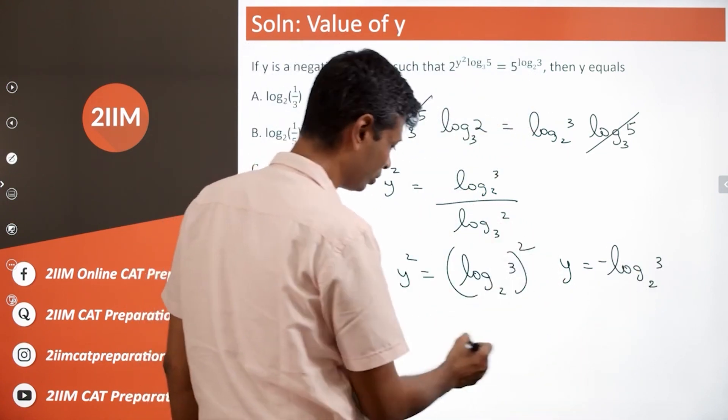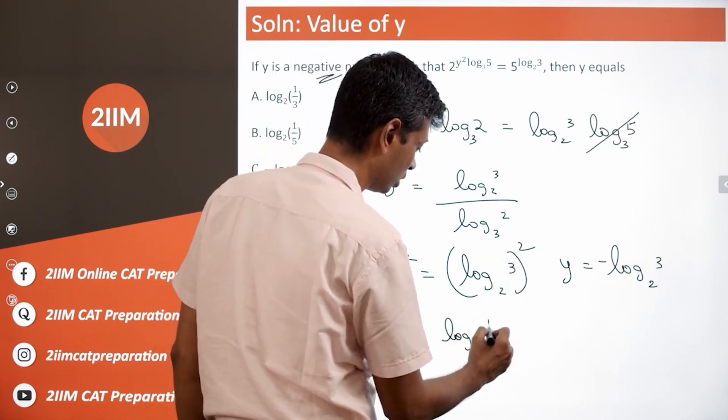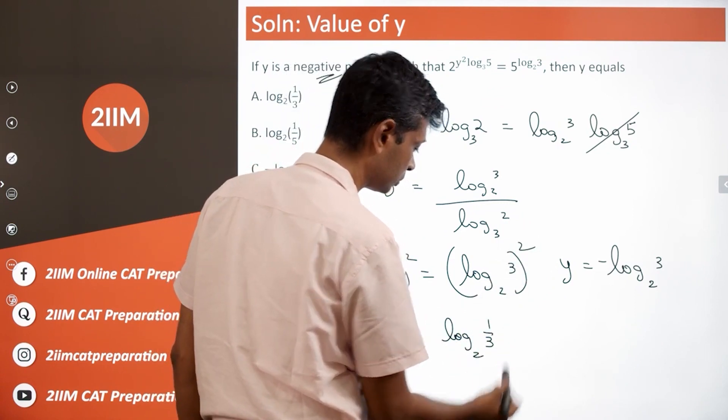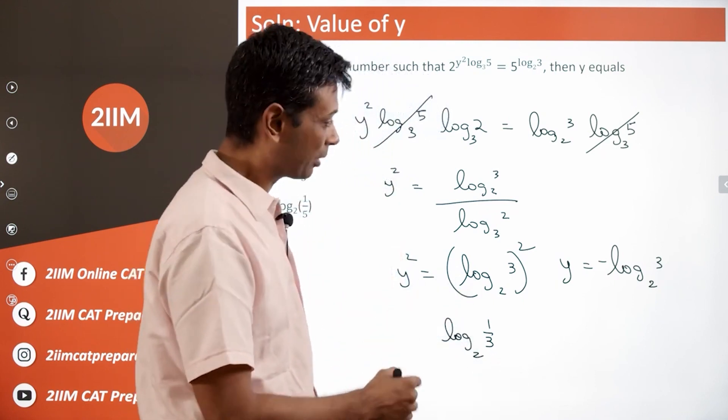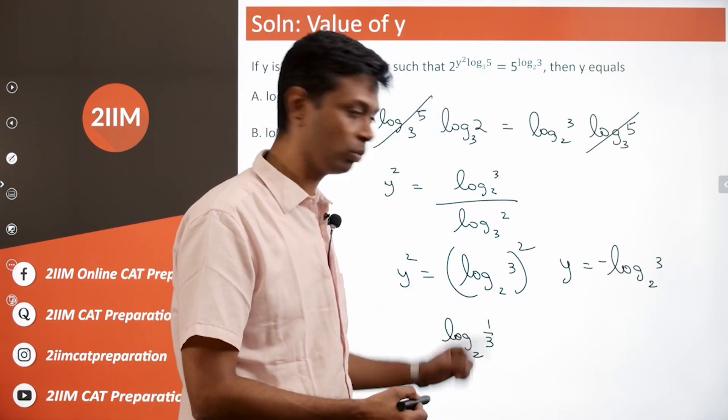Log 3 to the base 2 and minus of log 3 to the base 2 is nothing but log 1 by 3 to the base 2. 2 power something is 3. 2 power minus of something, minus of the same thing, will be 1 by 3.